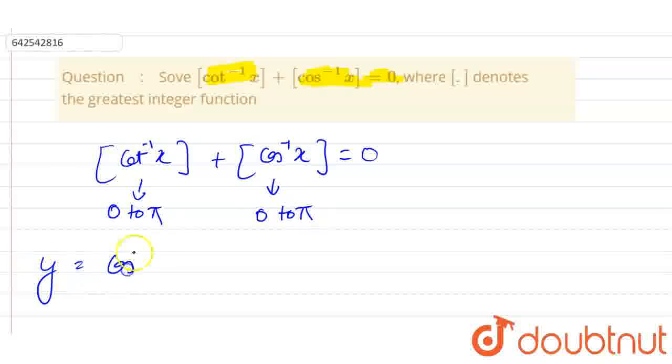Let y equal cos inverse x. The domain of this function is minus 1 to 1 and the range is 0 to π.